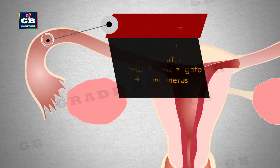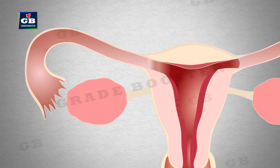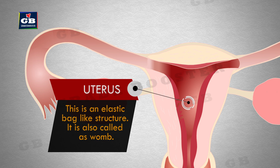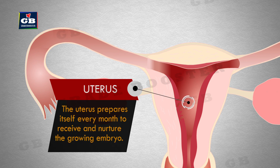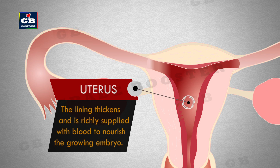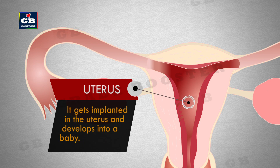Uterus: this is an elastic bag-like structure, also called the womb. After fertilization, the zygote reaches the uterus and further divides to form an embryo. The uterus prepares itself every month to receive and nurture the growing embryo. The lining of the uterus thickens and is richly supplied with blood to nourish the embryo, which gets implanted in the uterus and develops into a baby.